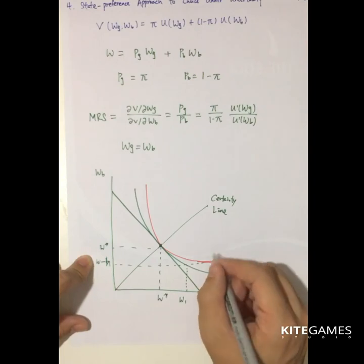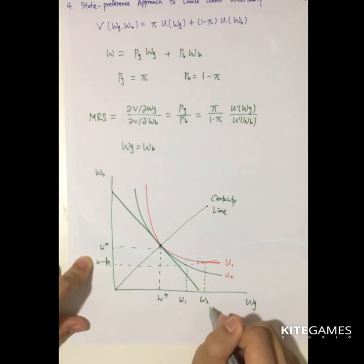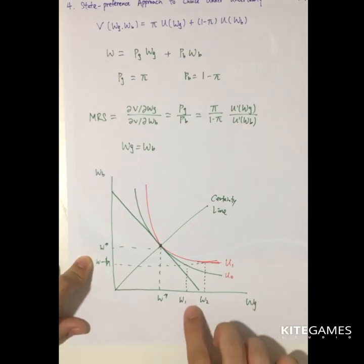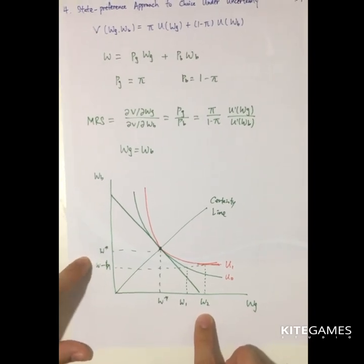And for the more risk averse one, you need to compensate the wealth in W2. So the distance difference between W2 is the measure of how the risk averse level affect the compensation level.